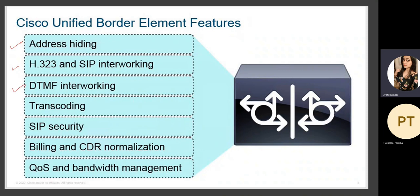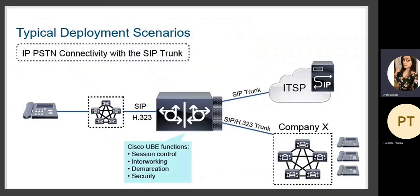Additional CUBE features include DTMF internetworking, transcoding, SIP security, billing and CDR normalization, and quality of service and bandwidth management. CUBE can do a lot of tasks, and traffic can be separated or segregated for CUBE to perform individually.